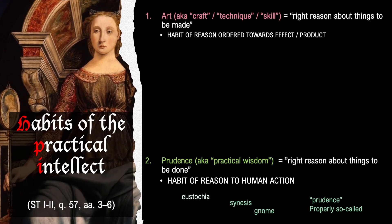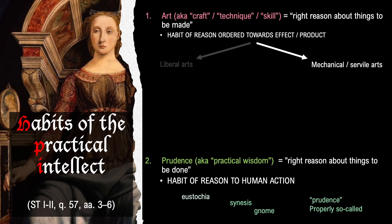Likewise, art includes several virtues. On one hand, there are mechanical or servile arts. On the other hand, there are liberal arts. Mechanical arts have a product that is for the sake of the body — for instance, medicine, engineering, cooking, software design, and military strategy all aim at producing something ordered towards the good of the body. Liberal arts have a product that is for the sake of forming the soul, disposing it to more easily acquire the moral and speculative virtues.